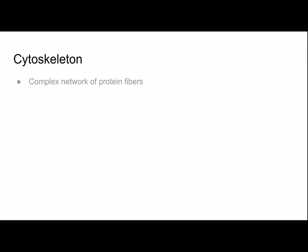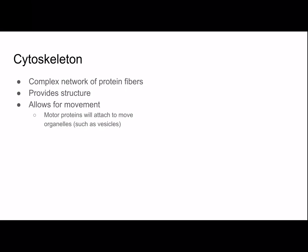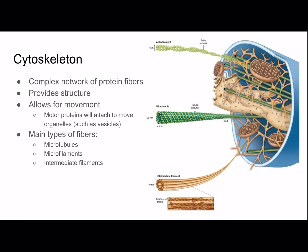Last, we have the cytoskeleton, which is a complex network of protein fibers that provides structure for cells and allows for movement. Motor proteins will attach onto these fibers to move organelles such as vesicles. The main types of fibers are microtubules, microfilaments, and intermediate filaments. Here's a picture with the three — the actin filament is called that because it's made of actin, but they're also called microfilaments.